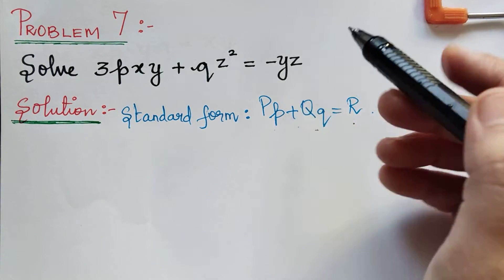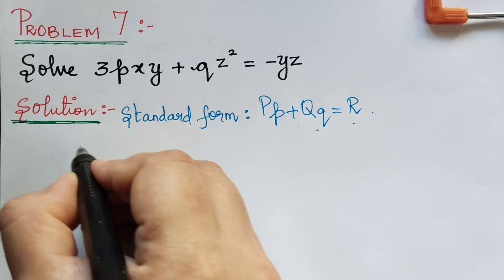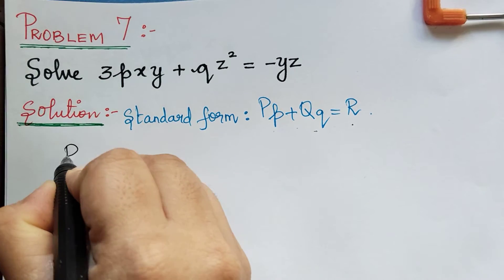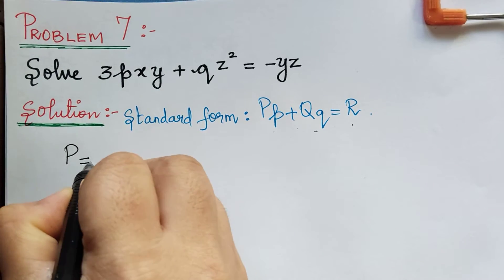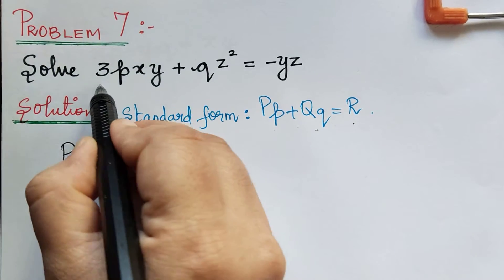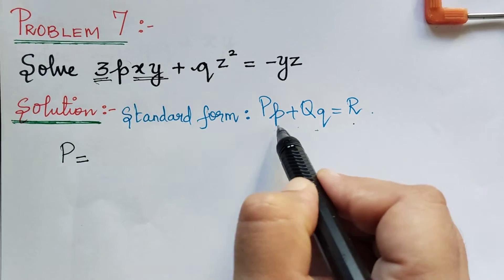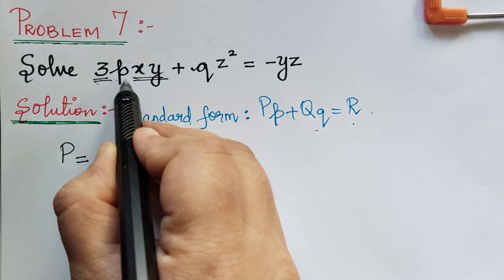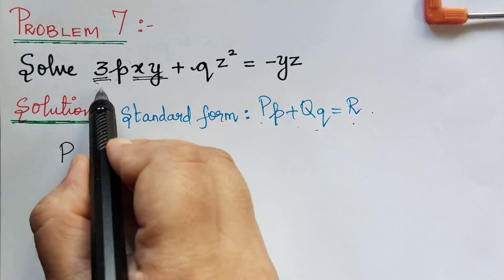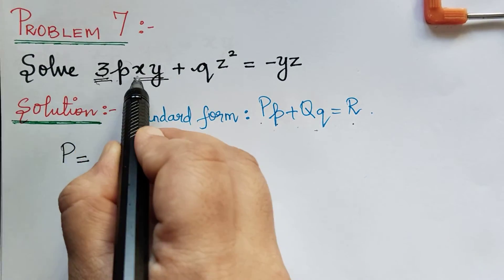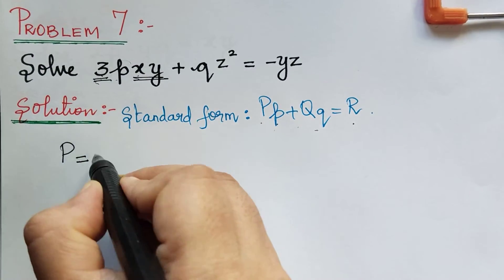Comparing with the given equation, we get capital P to be equal to 3xy, because this is small p. So the value of capital P will be 3xy.